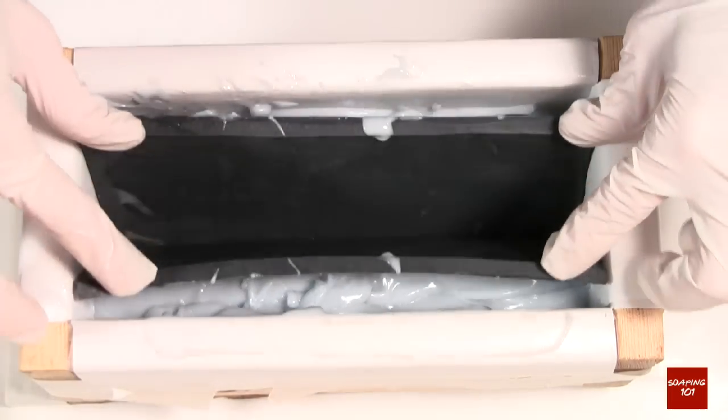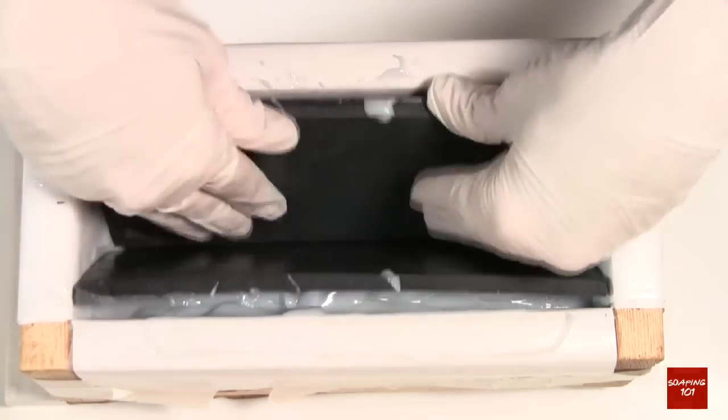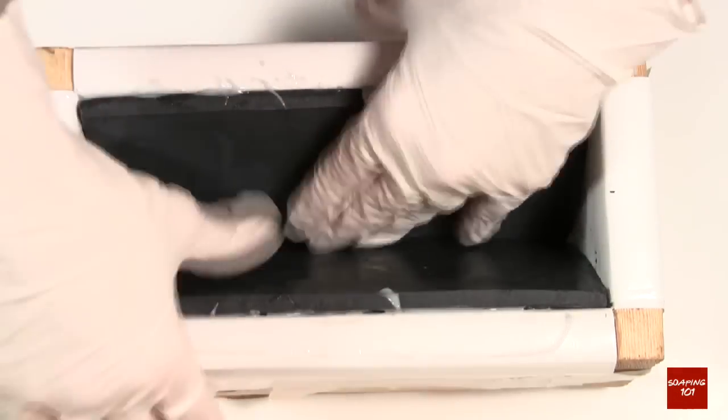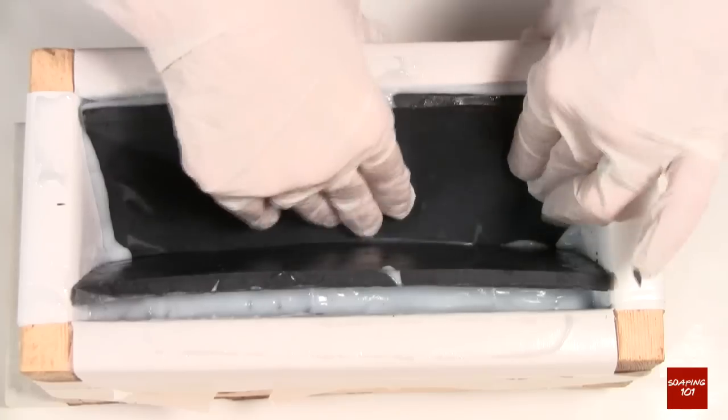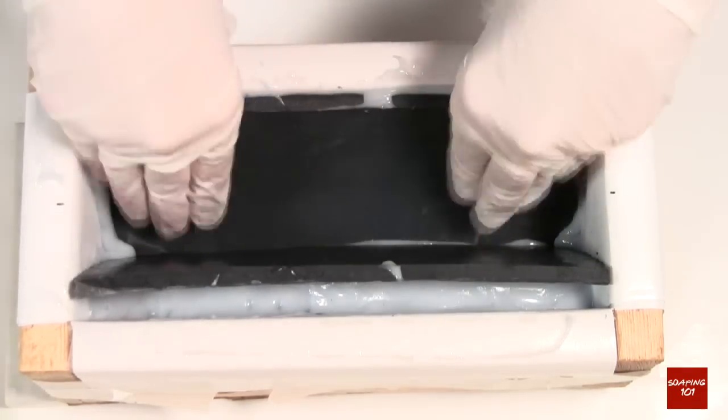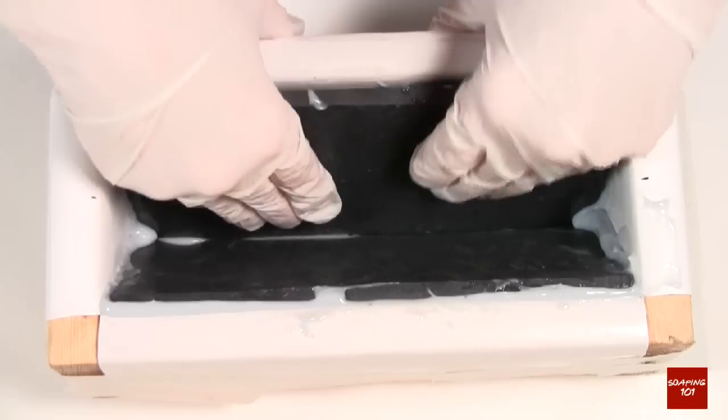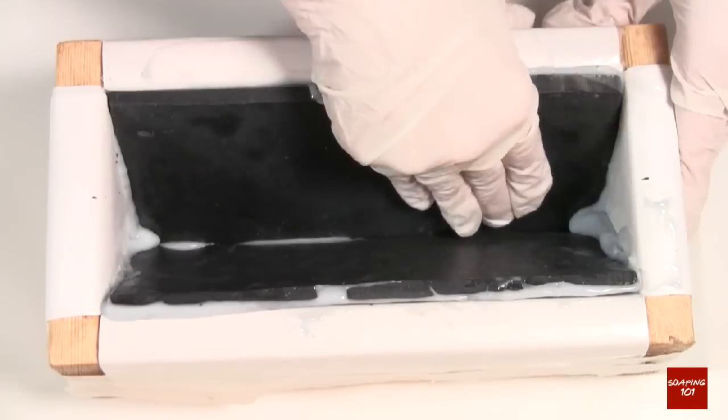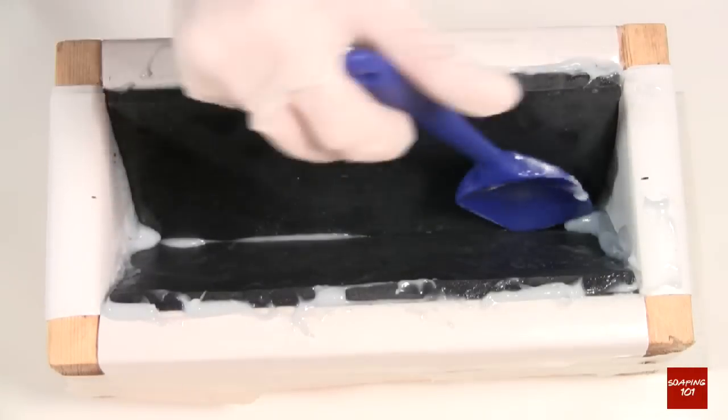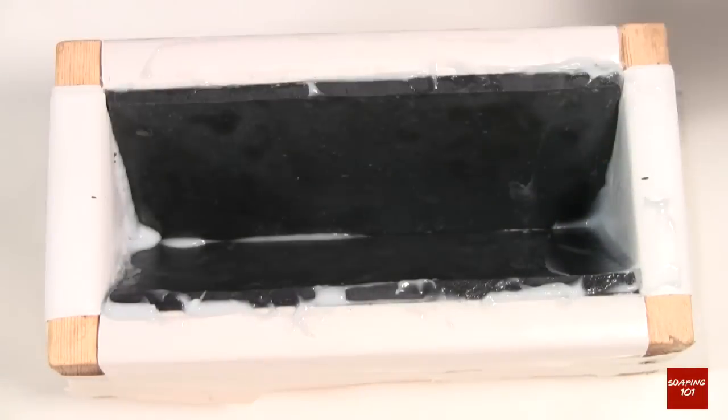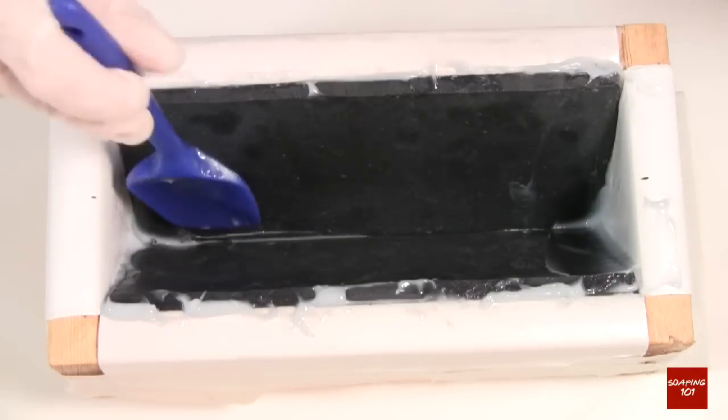I am now pushing the inserts out at an angle, almost forming a valley in the middle. The blue colored soap will rise and fill in any empty spaces. I also want to make sure that there is little to no soap that leaked on the inside.